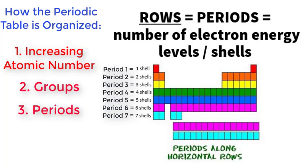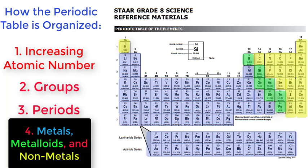A fourth way the periodic table is organized is by metals, metalloids, and nonmetals. This is something you learned in sixth grade, but I wanted to take a minute and review this knowledge with you.